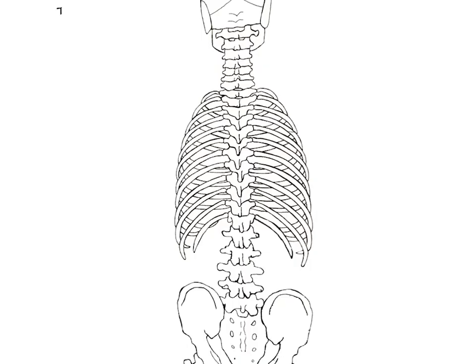We'll now start by considering the transversospinalis muscle group — the deepest muscle group in the back region. These muscles generally go from the transverse process up to the spinous process, so they are angled obliquely, going upwards and medially. The rotatoris generally spans one to two segments and is most specifically seen in the thoracic region where rotation is the prime movement, giving each segment the ability to rotate on the other to produce a large amount of rotation.